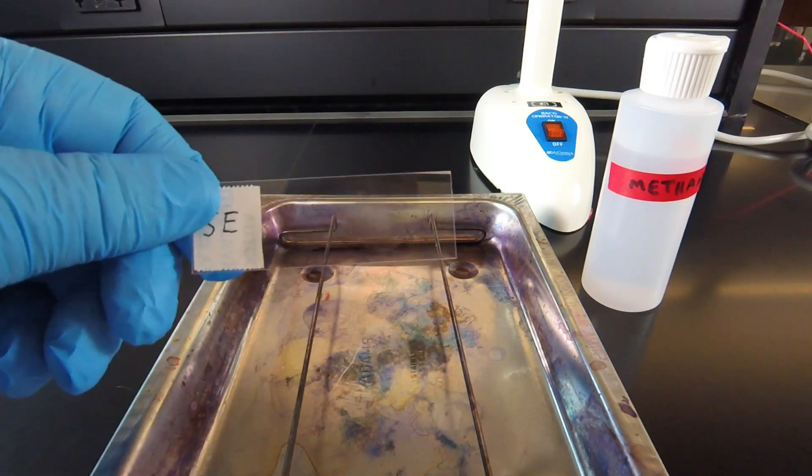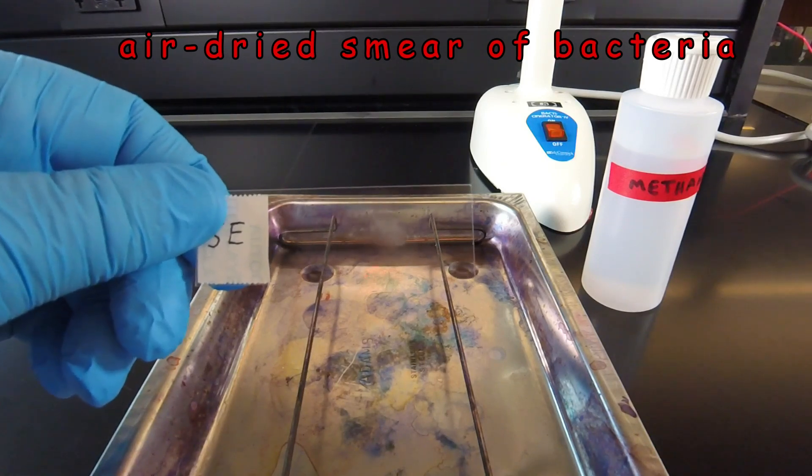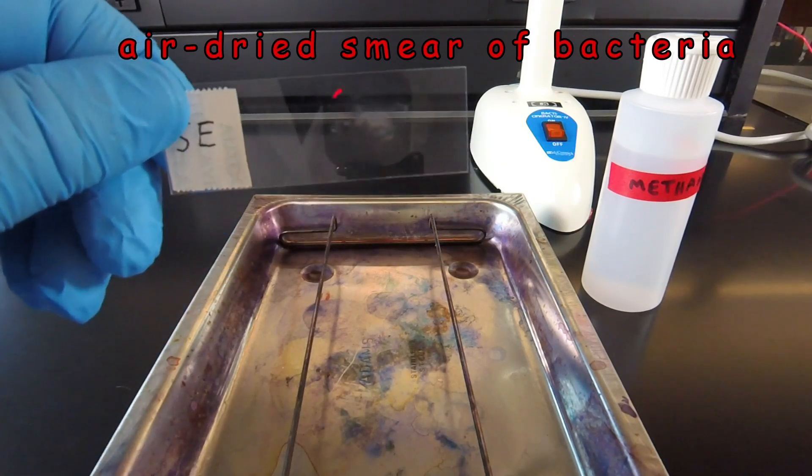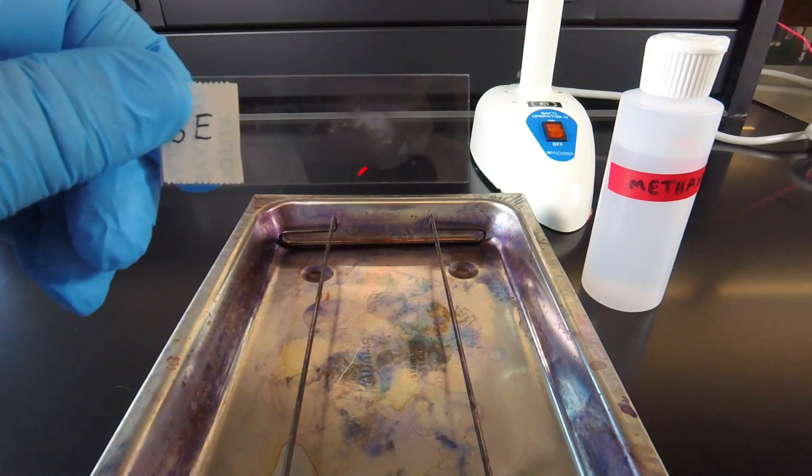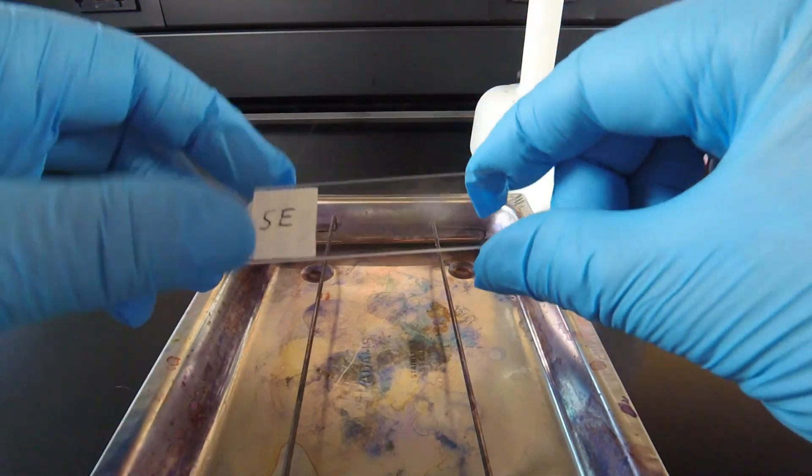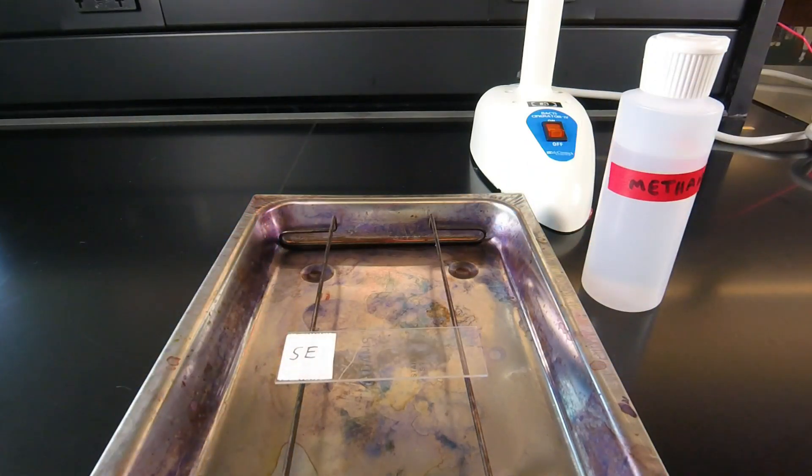We have a slide that we've prepared. This is an air-dried smear of the bacteria coming off of an agar culture, and we learned how to do this preparation in a previous video lesson. So we place our microscope slide with the air-dried smear on our staining tray.